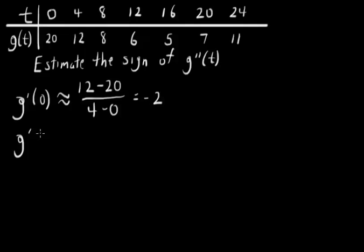Do that again. g prime of 4 is approximately equal to, now we've got 8 minus 12 over 8 minus 4, negative 1.